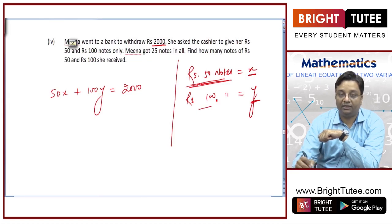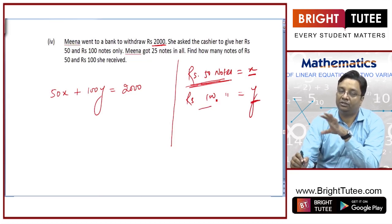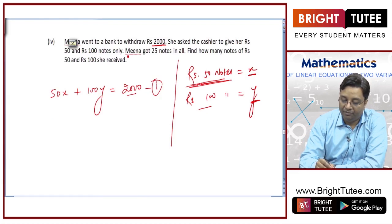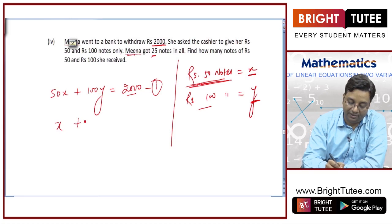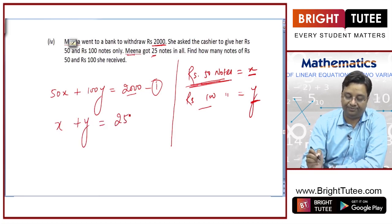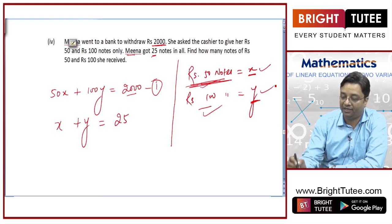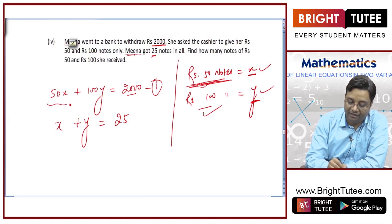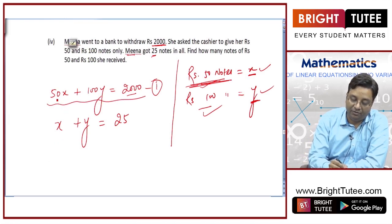Similarly, 1 note of 100 is 100 rupees, so y notes are 100y rupees, and in total she withdrew 2000 rupees. And Meena got 25 notes in all, so x plus y is equal to 25. We need to find x and y. To equate the coefficients, rather than multiplying, I can divide equation number 1 by 50, which will equate the coefficient of x.